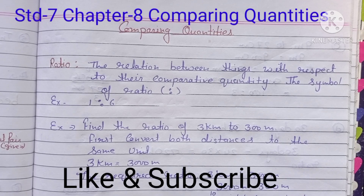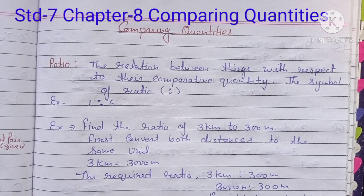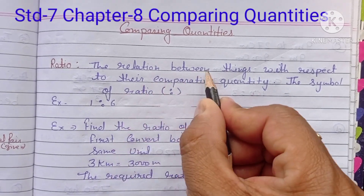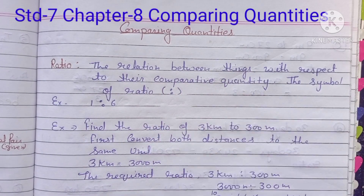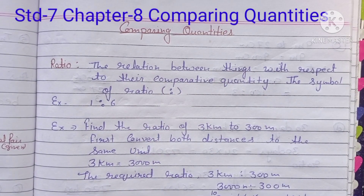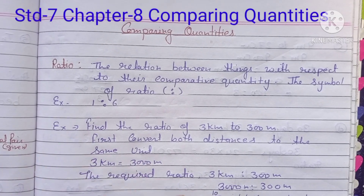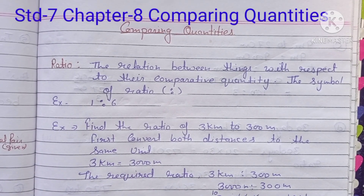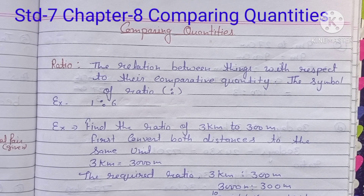The first definition is ratio. So what is the meaning of ratio? The relation between things with respect to their comparative quantity. Suppose we have two things and we compare between the quantities.